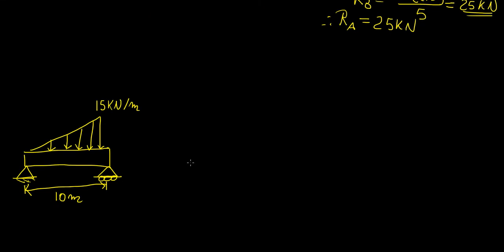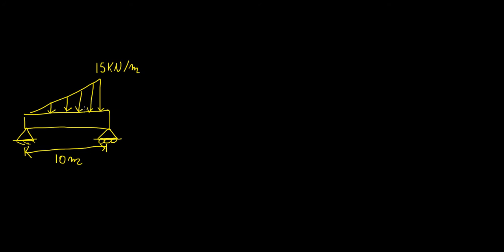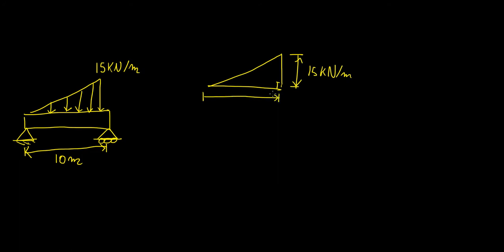Now I'm going to show you an example of another very common type of loading: a triangular load. This is quite common when you expect your structure to be loaded more on one side than the other, assuming a linear relationship. The distributed load is in the form of a right-angled triangle, where the total height represents the value of the distributed load and the width is given by the length of the beam. The area of this triangle gives the resultant force, which acts at the centroid — for a right-angled triangle, that's at one-third from the base. So this distance is 10 divided by 3, which is one-third of the total length.